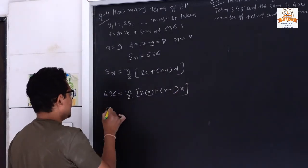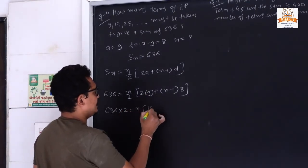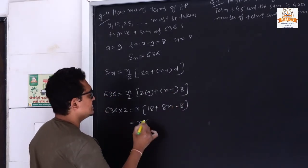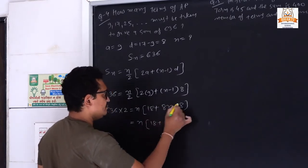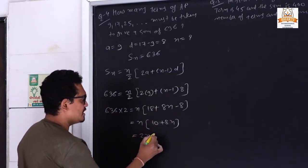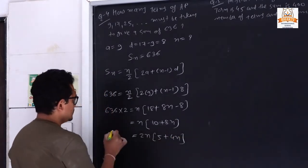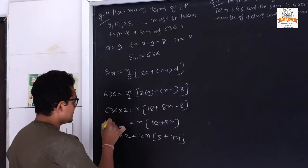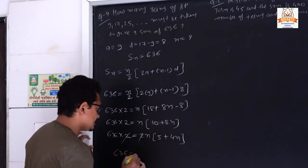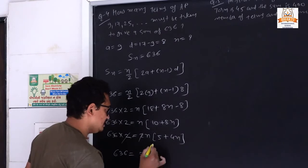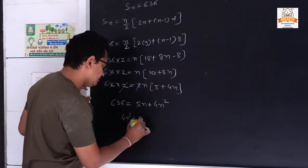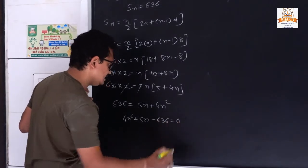Substituting: 636 = n/2 × (2×9 + (n−1)×8), which gives 18 + 8n − 8, simplifying to 10 + 8n. Taking 2 as a common term gives 5 + 4n. So 636 × 2 = n(5 + 4n), and after cancelling the 2, we get 636 = 5n + 4n². Rearranging: 4n² + 5n − 636 = 0.